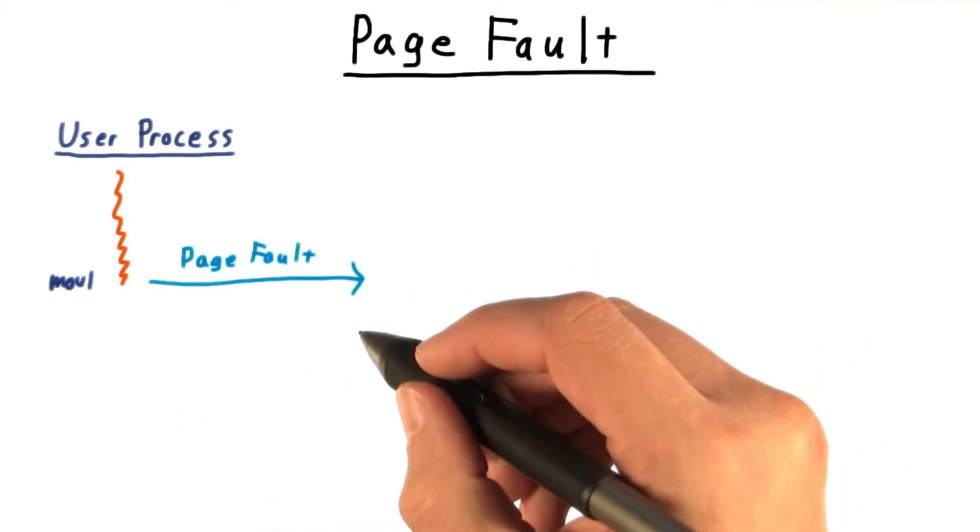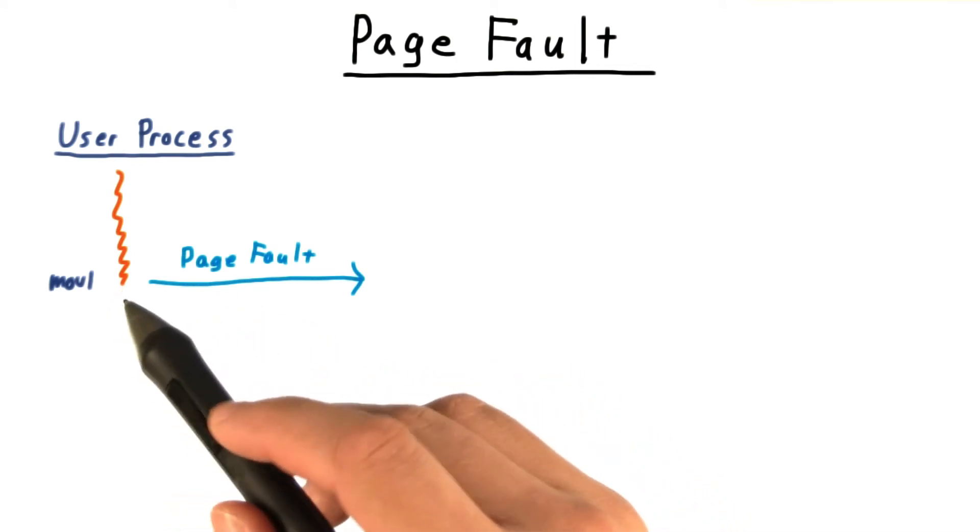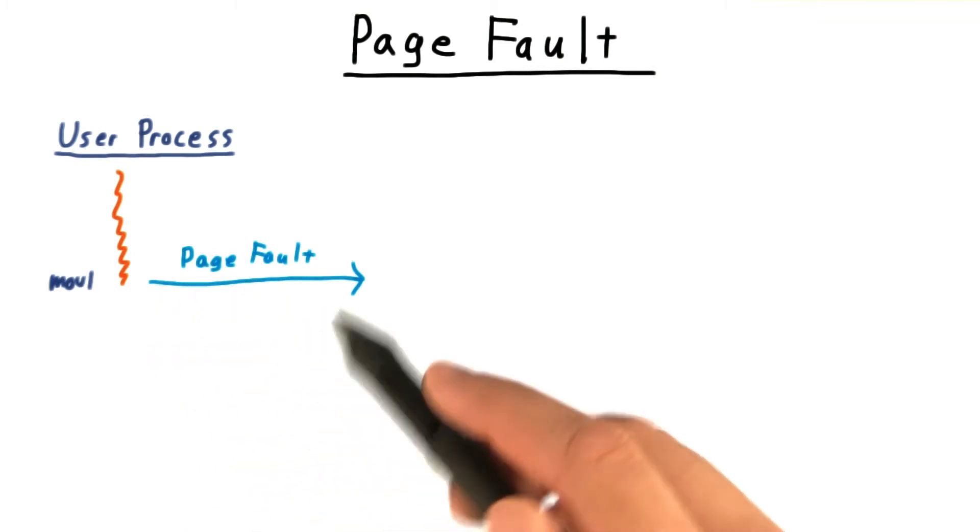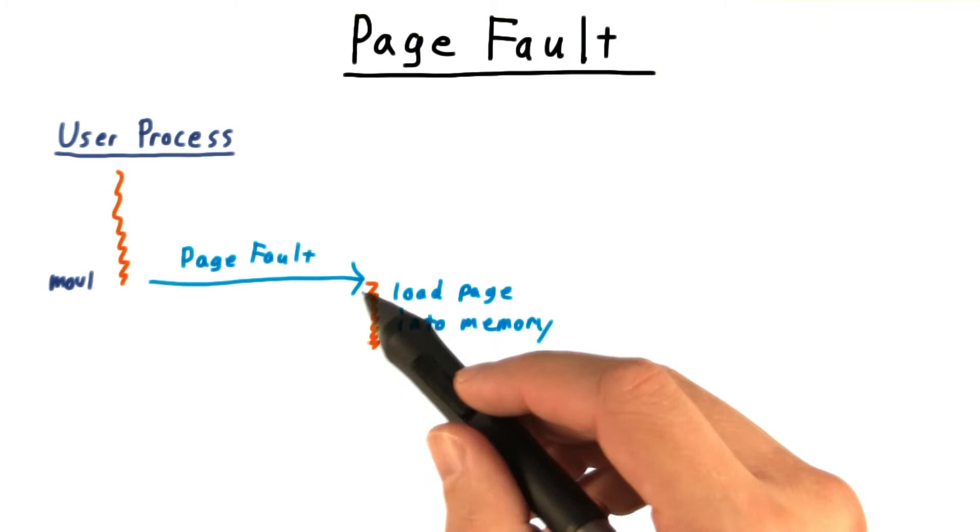Actually, it's not that big a deal. An exception is raised, which sets the running process back to be ready to repeat the instruction that created the fault. Meanwhile, the operating system's page fault handler takes over to address the problem.